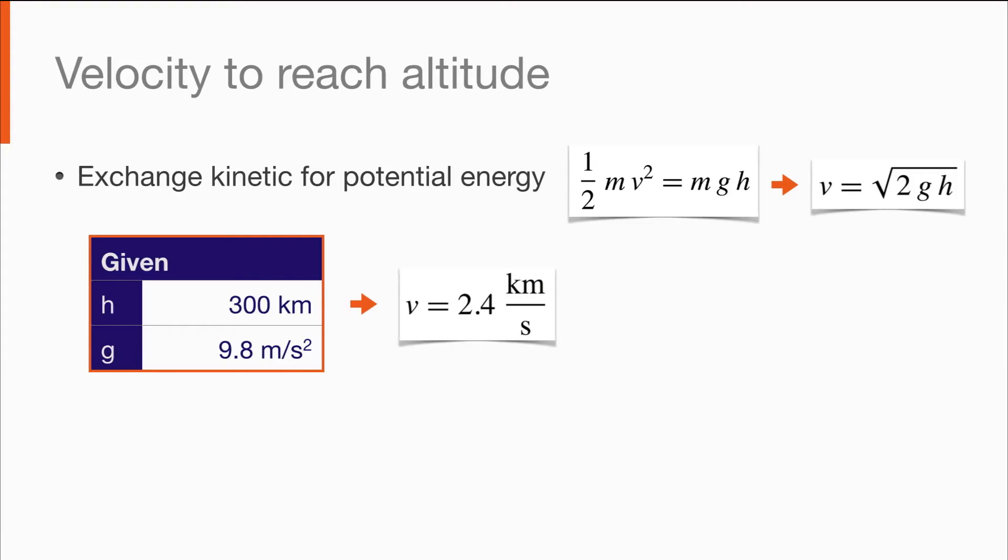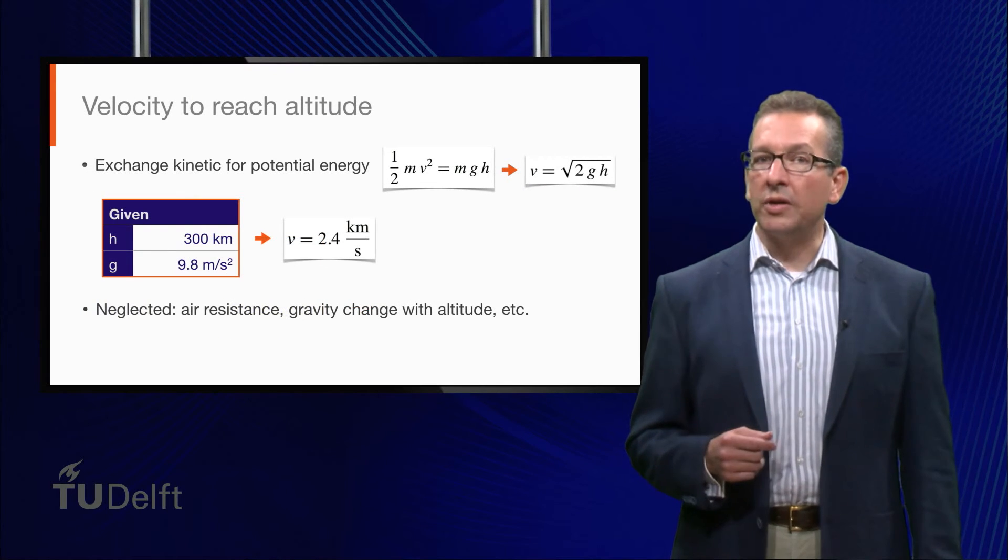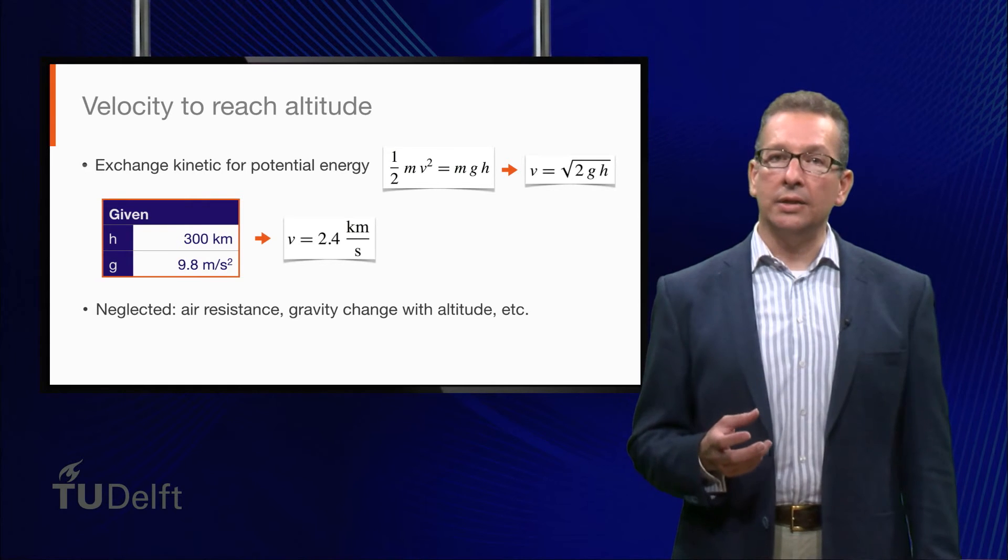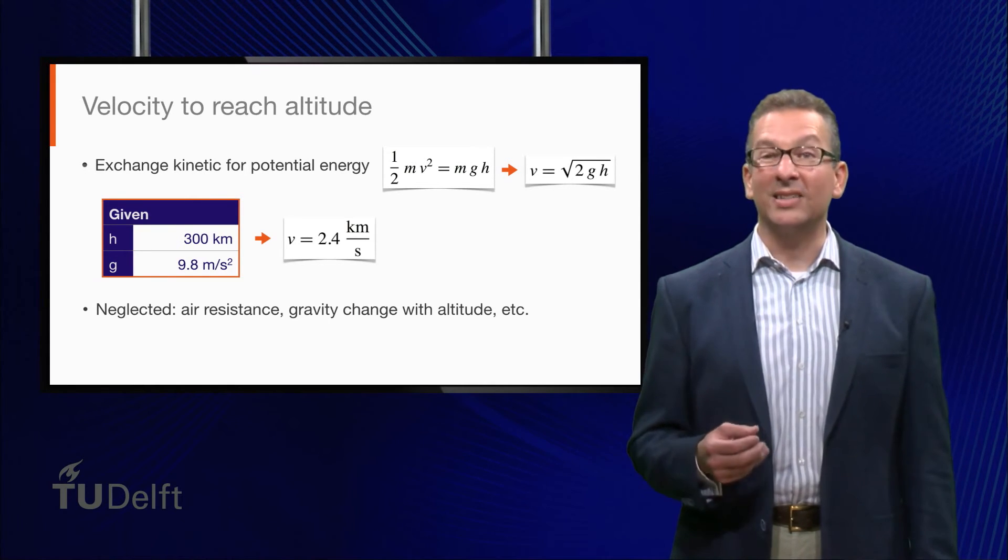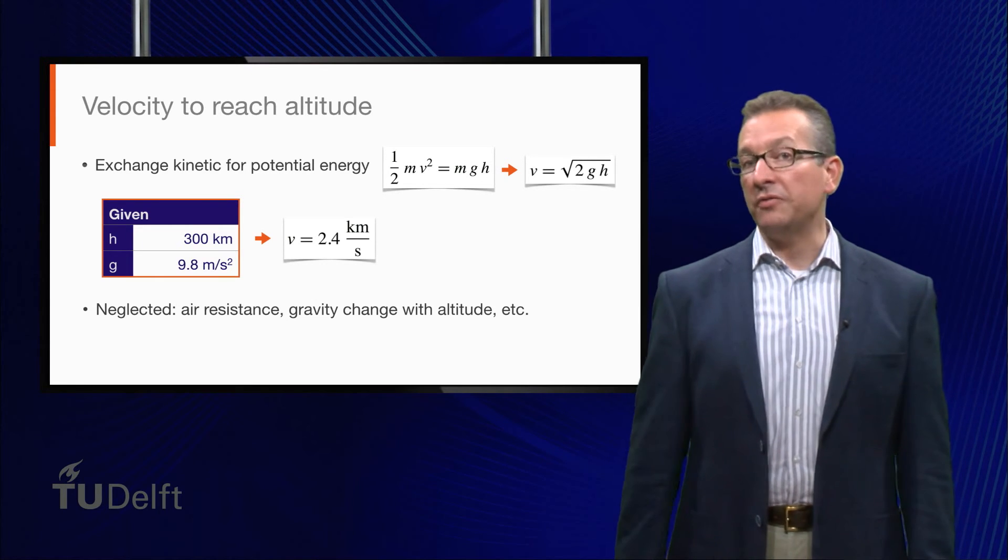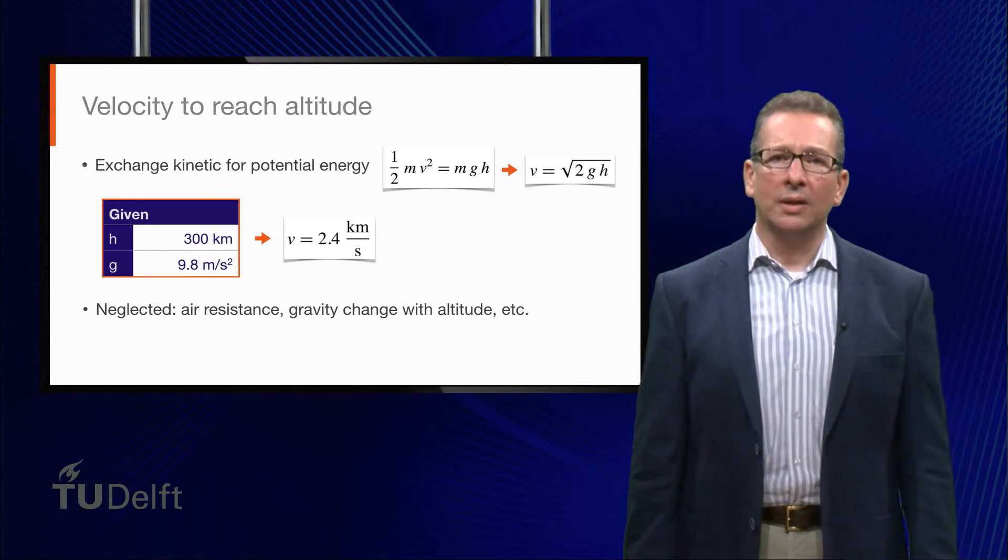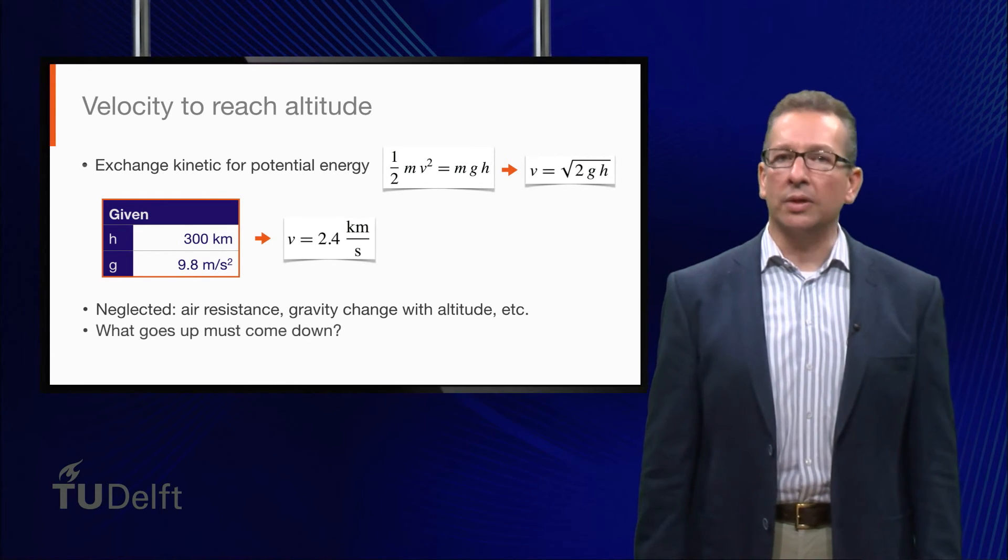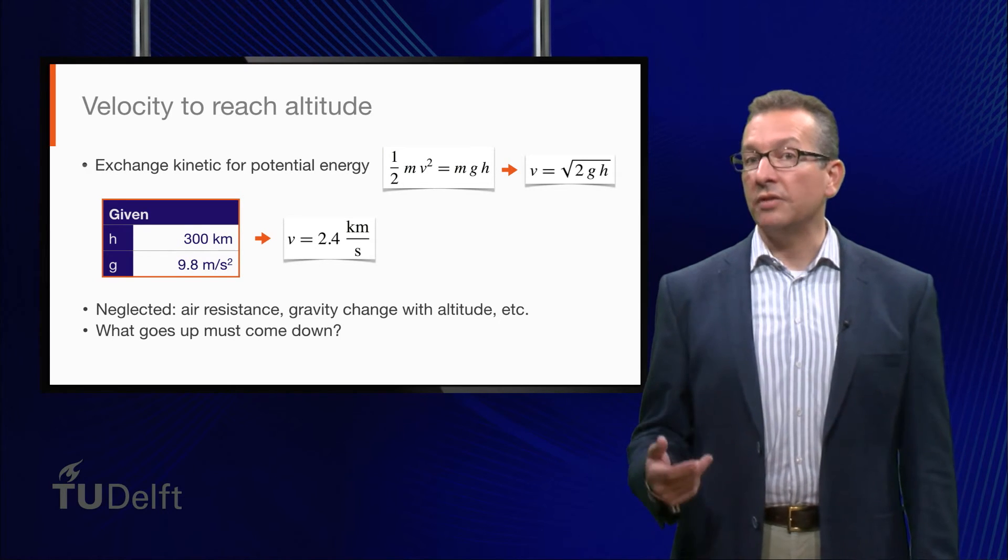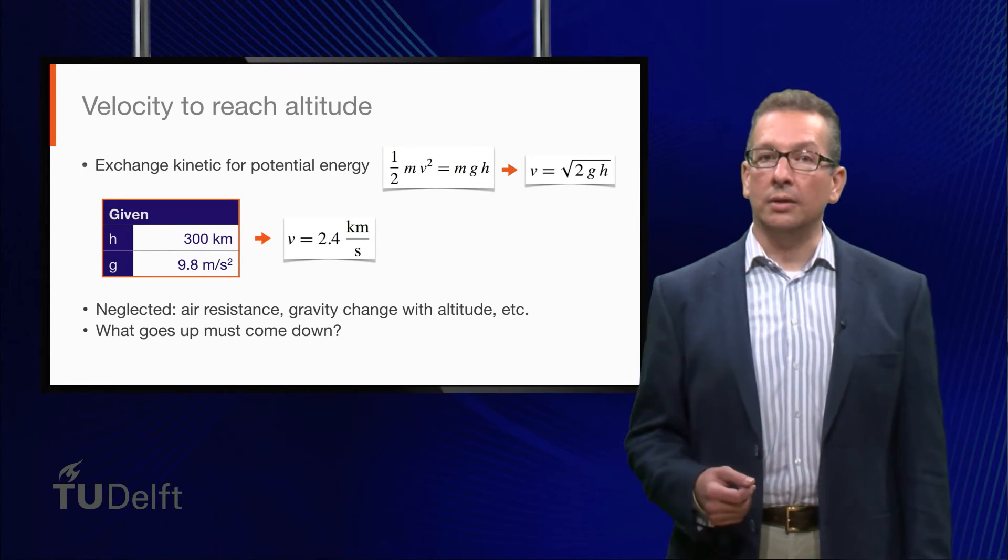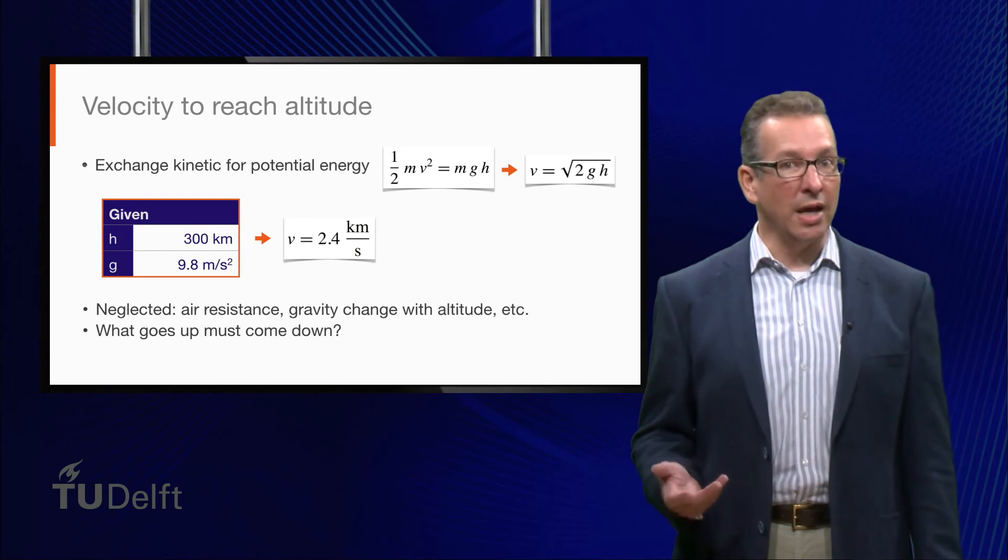Now, it's important to re-emphasize that this is also a very rough estimate. Once again, we've neglected air resistance, the change of the gravitational force with altitude, and so forth. So now we've got our ball-sized satellite at an altitude of 300 km, and it's got zero velocity. That's fine for some applications. We could take a few photographs or make some other measurements, but pretty soon our payload is going to fall back towards Earth. So with a velocity of 2.4 km per second, we've created a ballistic trajectory, not an orbit.